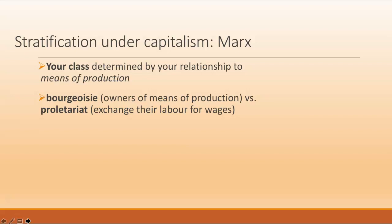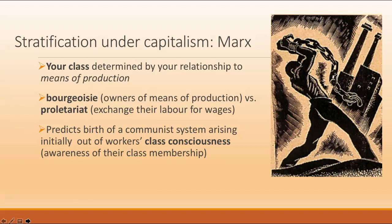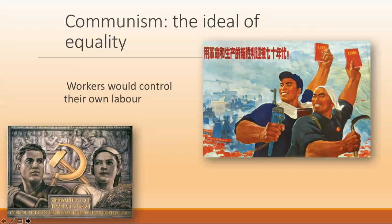The key thing here is that the relationship between these two groups is unequal and antagonistic. A factory owner's motivation is to increase profits for shareholders, and one key way to do that is to exploit workers by expecting them to work harder or for less. Over time, Marx argues, workers become more aware of their collective exploitation and there is a revolution leading to communism.